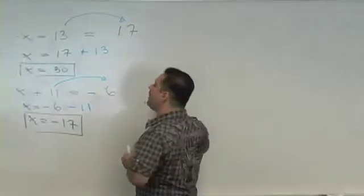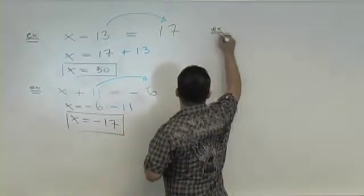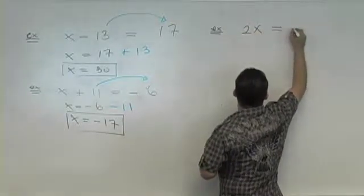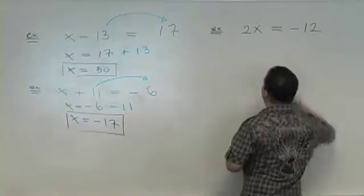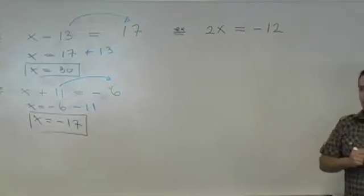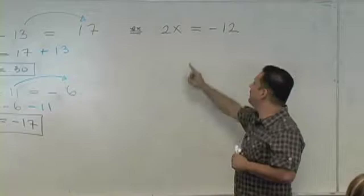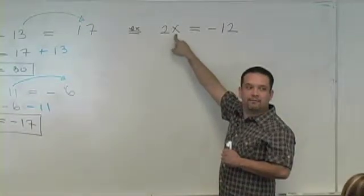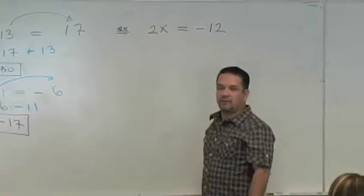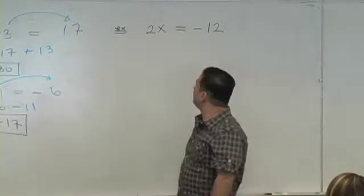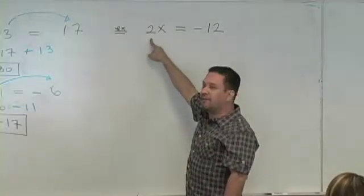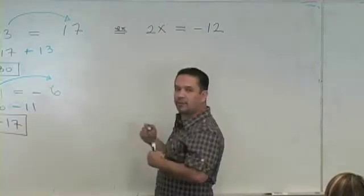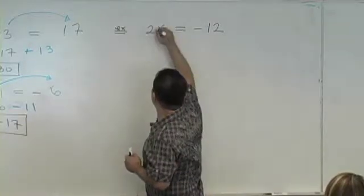Now let me show you what happens with this type of setting. What if we have 2x is equal to negative 12? And you have to solve for x and get x by itself. What do you guys notice? What's happening to this x? You got a 2 next to it. But that's not the whole story. What's that 2 doing here? 2 is being multiplied to x.